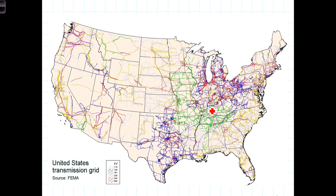Electricity is frequently generated some distance from the population centers where it's going to be used. The power is typically transported from one place to another at high voltages along a complex connection of transmission lines — we refer to that as the power grid. This is a map of the power grid here in the United States. You'll notice the concentration of power lines, transmission lines, and generating facilities in the high-density population areas of the United States.